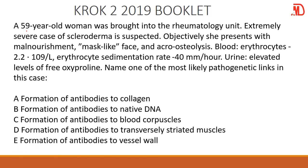So we have a 59-year-old woman in the rheumatology unit for a case of scleroderma — that's what they are suspecting — and that is leading to an increased level of oxyproline. To understand what is happening here, you first need to understand what scleroderma is. Scleroderma is simply an autoimmune reaction or inflammation of the connective tissue, and we all know that connective tissue is mainly made up of collagen fibers.